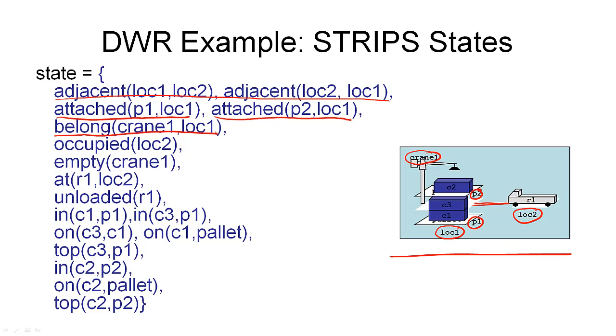What we also have in this example is this robot R1. And we can see here that the robot is at location two, which is this relation here. And that means that location two is occupied by this robot. And we can also see that the robot is unloaded, which means there's no container on the robot. Also, the crane isn't holding a container. So, empty crane one must also hold in this state.